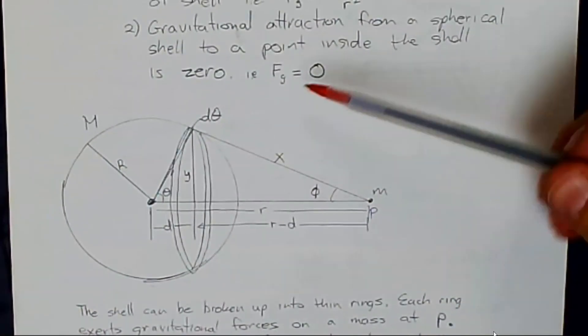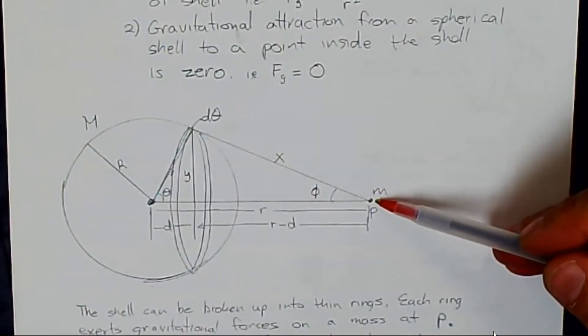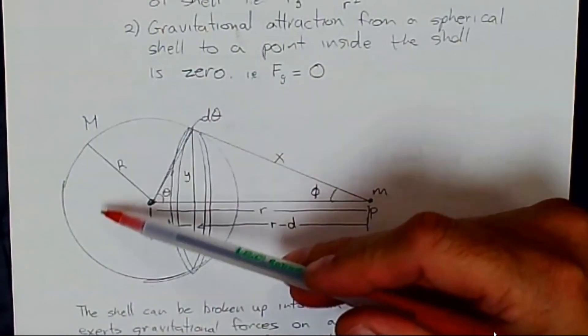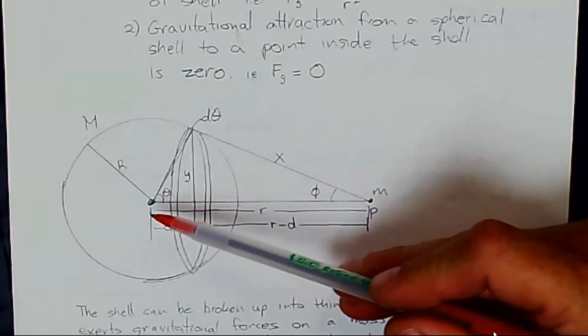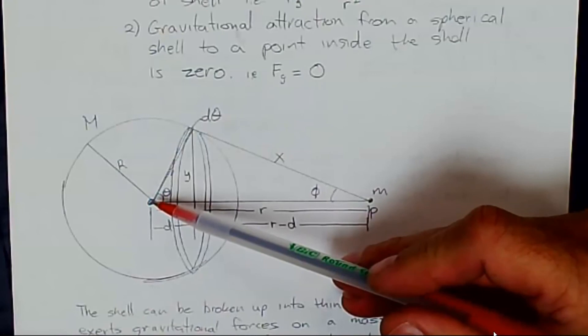So Newton's shell theorem says that the gravitational attraction on this mass out here, because of this shell of mass, is the same as if all this mass was located at its center.